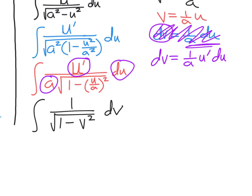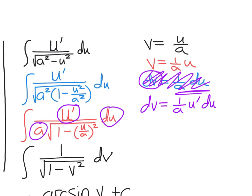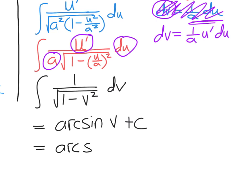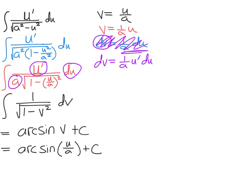Now the expression is a one. The anti-derivative of one over the square root of one minus v squared dv is arc sine of v plus C. We know that v equals u over a. So the answer is arc sine of u over a, plus C. Got there eventually.